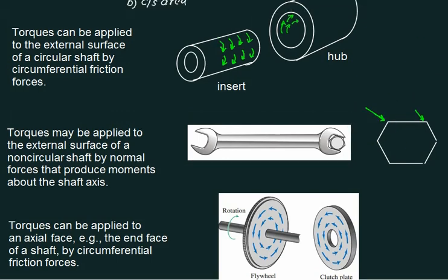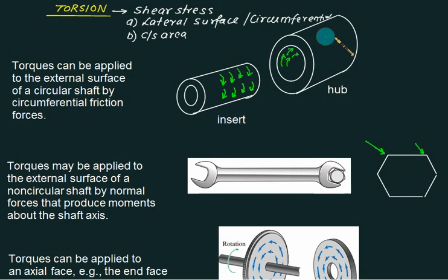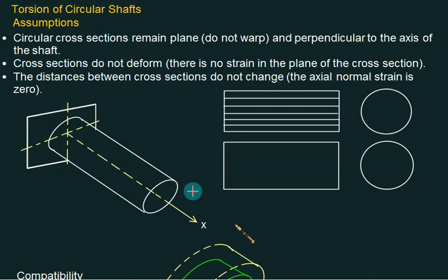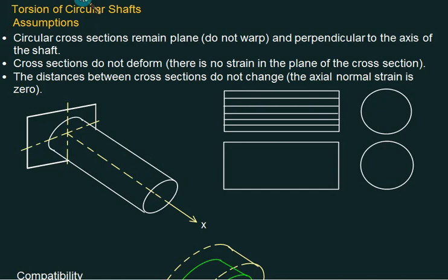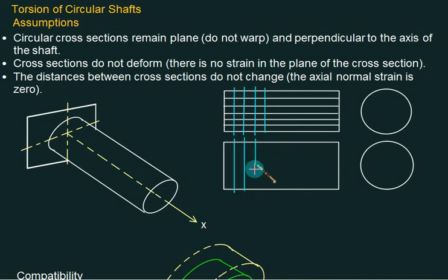Now, what we are interested in is the formation of shear on the lateral or cross-sectional sides. Normally we have two types of shear that occur: one on the lateral surface that is the circumferential surface, and second on the cross-sectional surface. One of the assumptions in torsion is that the circular cross-section remains plane — it does not warp — and remains perpendicular to the axis of the shaft. Before you apply the torque and after you apply the torque, this is one assumption.